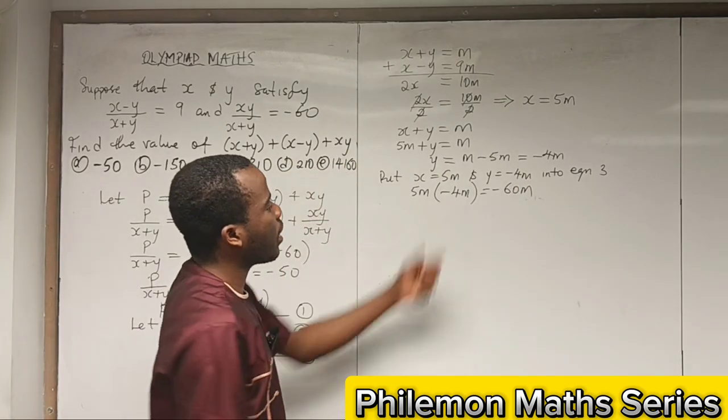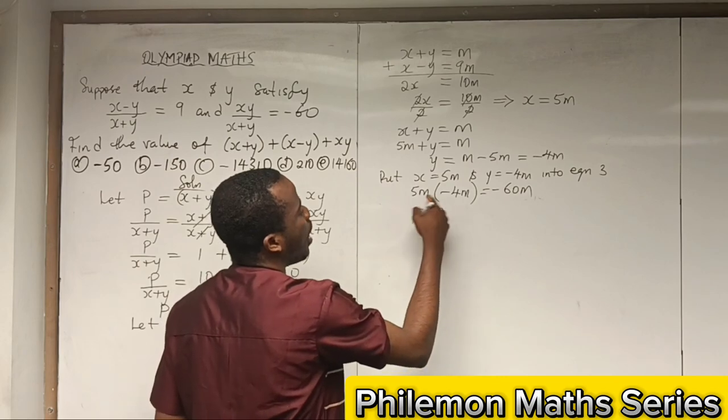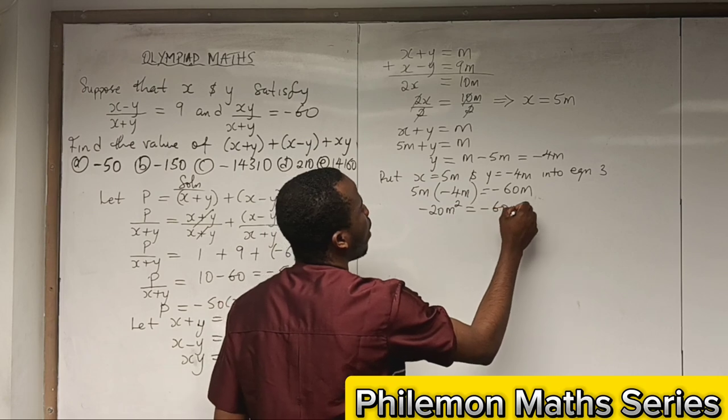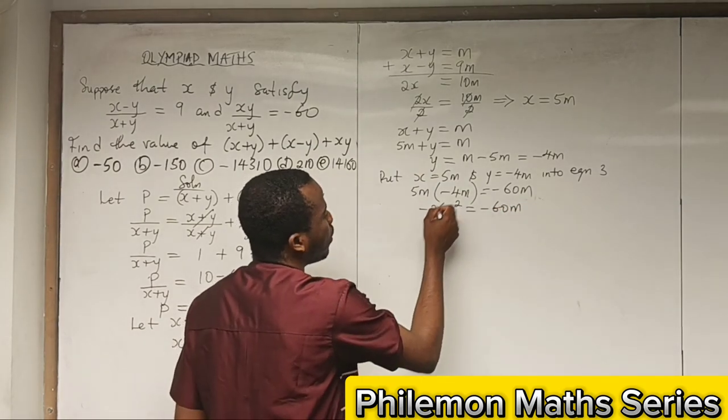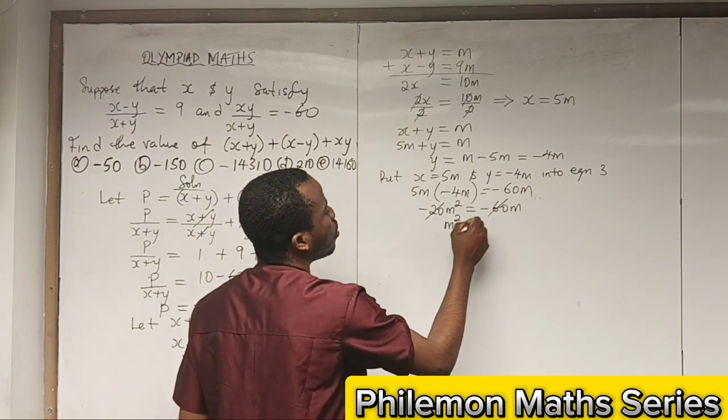When we open these brackets, 5 times -4 is -20, and m times m is m². So -20m² = -60m. We can cancel and have m² = 3m.